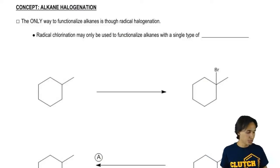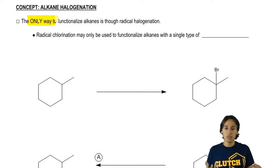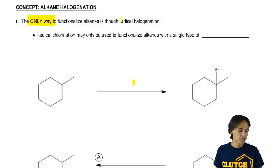So this was actually a pretty easy rule because we just remembered that this is the only way to functionalize alkanes through radical halogenation, that's the only way.